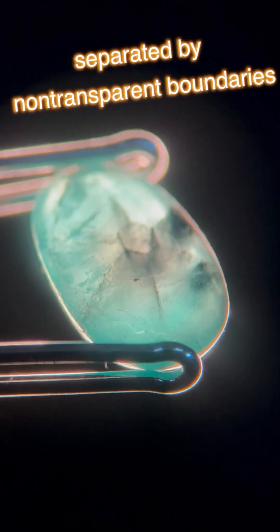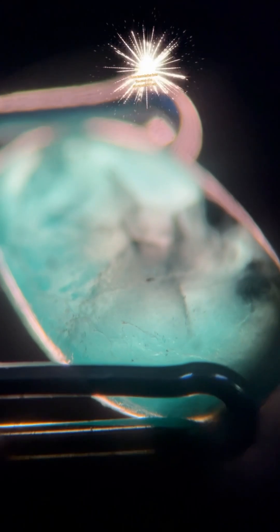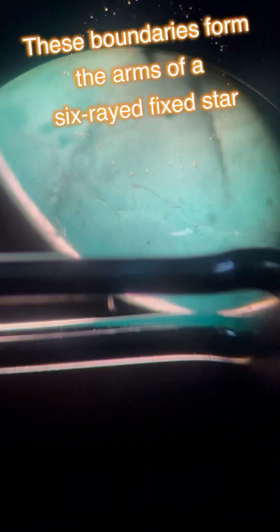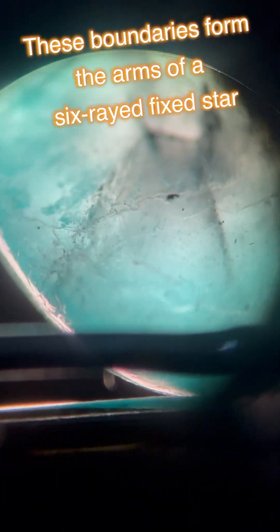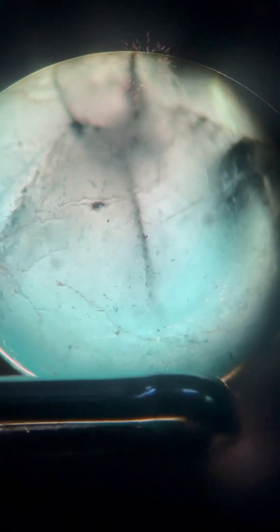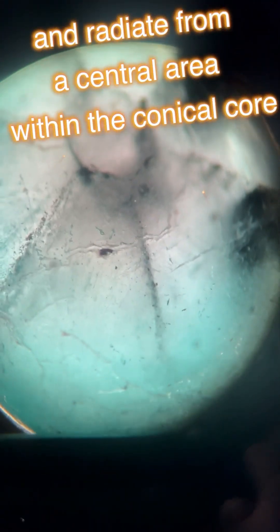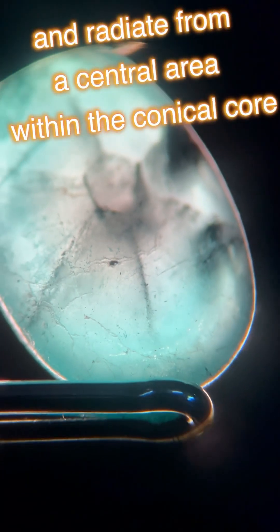These emeralds get their name from the trapiche, a grinding wheel used in Colombia, South America, in the regions where these gems are often found. People use these wheels to process sugar cane. As you can see in this video, some of these gems resemble a spoked wheel with a hexagonal core.